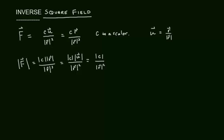If we call the magnitude of c as k, the constant of proportionality, then the magnitude of the inverse square field is inversely proportional to the square of r, or the square of the distance from the origin. So it makes sense that it's called the inverse square field.